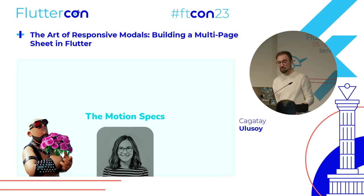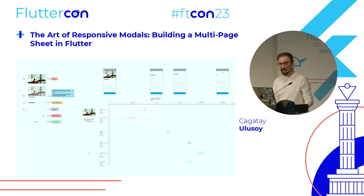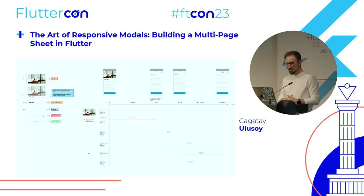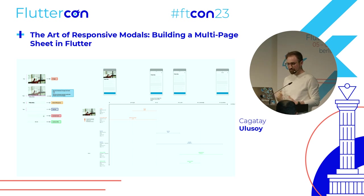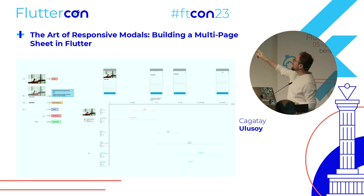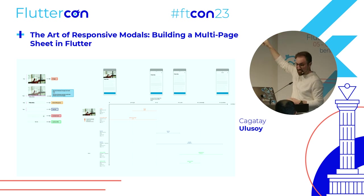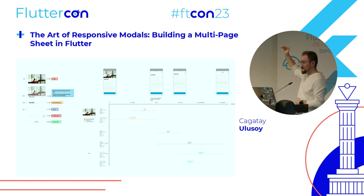Let's see how Masha hands over motion specs to developers. She builds specs for engineers using variables instead of numbers to represent the height of components. On the x-axis you see the scrolling in pixels — at zero it is the initial position — and on the y-axis you see how each component scales, translates, and changes opacity at a particular scroll offset.